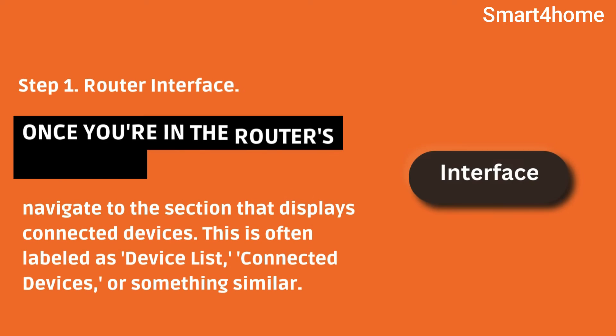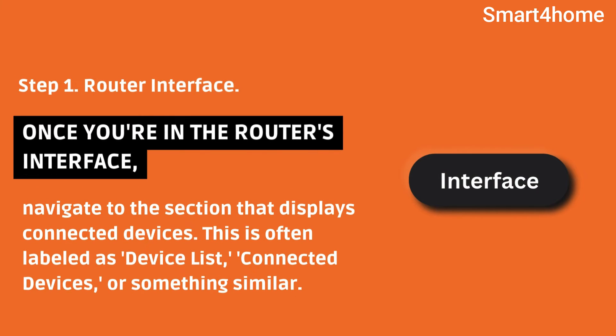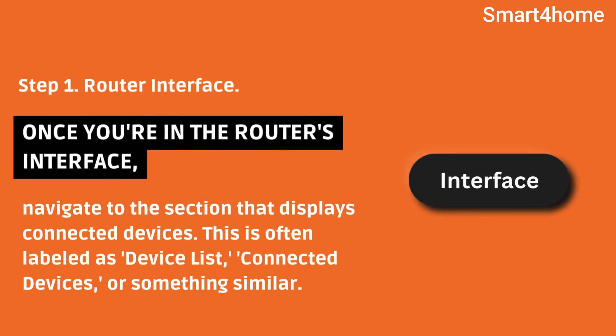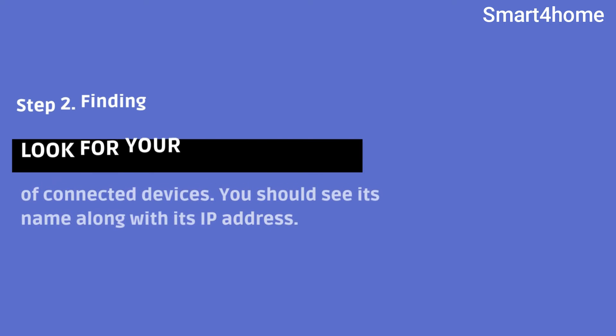Step 1: Router Interface. Once you're in the router's interface, navigate to the section that displays Connected Devices. This is often labeled as Device List, Connected Devices, or something similar.